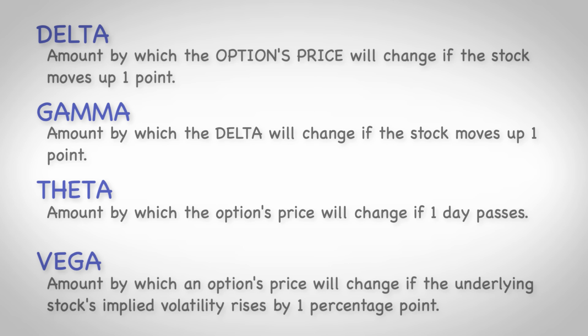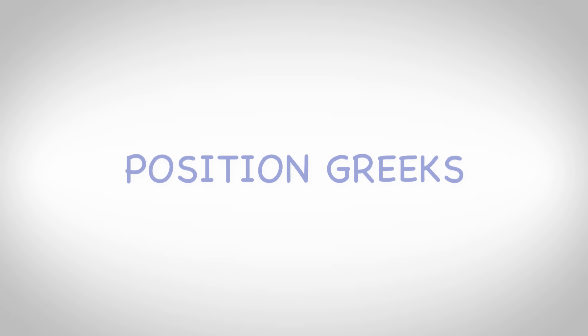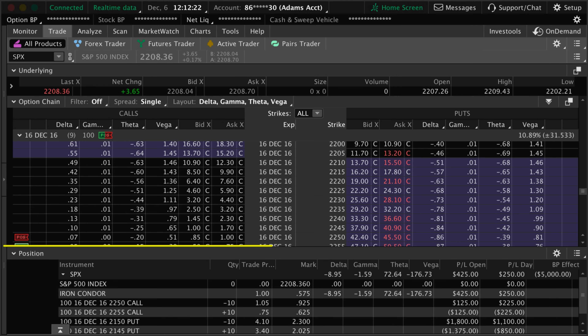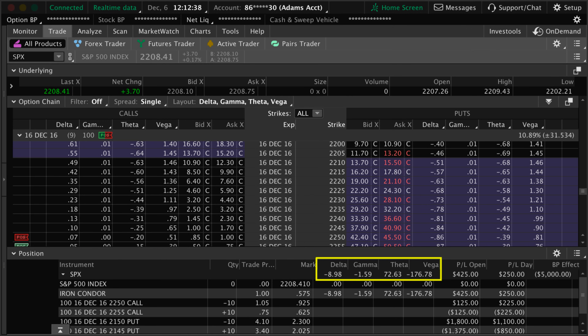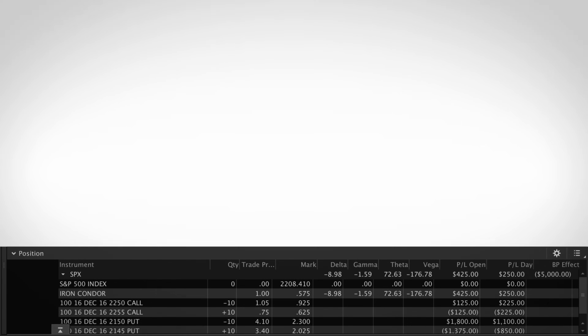We talked about how each of these greeks will give you an idea of what an option's price will do as each day passes and the underlying stock's price and implied volatility move around. But the cool part is we can also view our position greeks. Let's check out our current position in ticker symbol SPX, which is the S&P 500 index, and see what the position greeks are telling us.